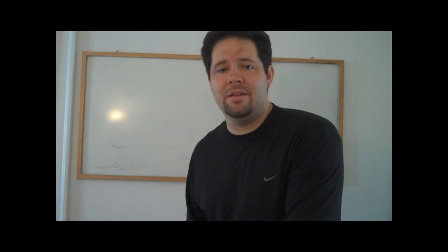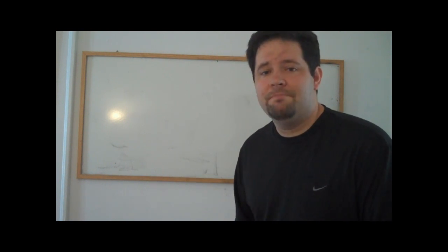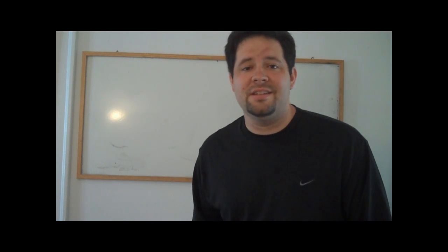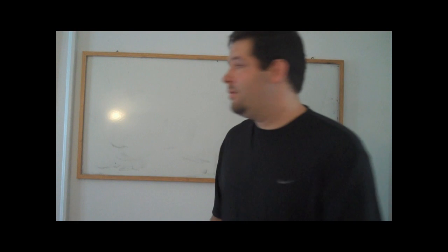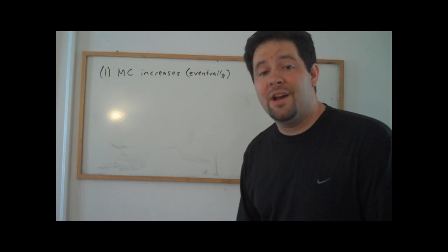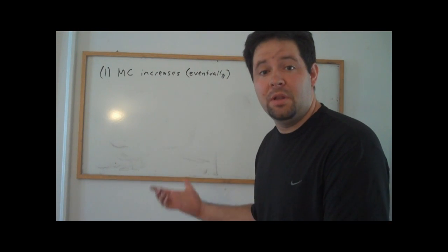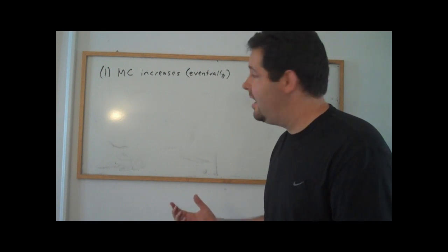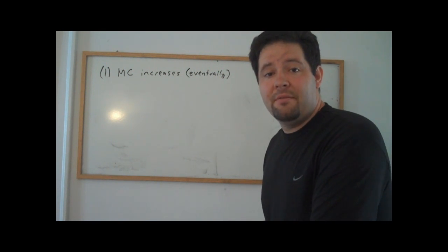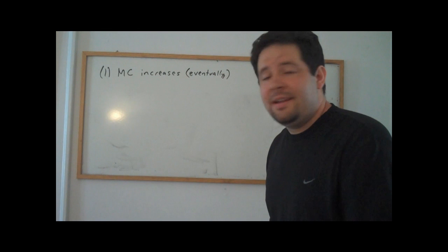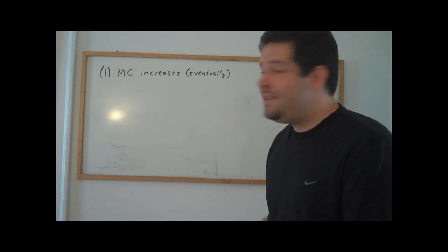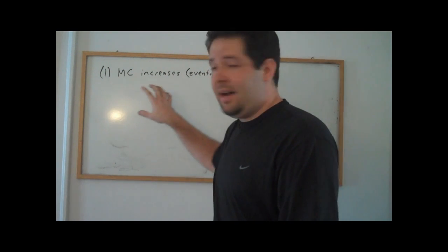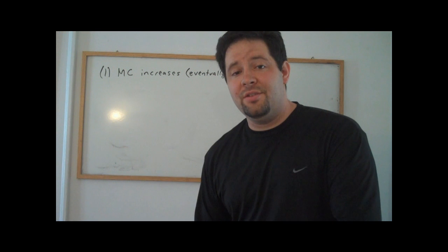If you don't know calculus, it's worth having a trick that doesn't use calculus. The first observation is that marginal cost is eventually increasing. This implies that marginal cost starts out below average variable cost and average cost, and ends up above both average cost and average variable cost.